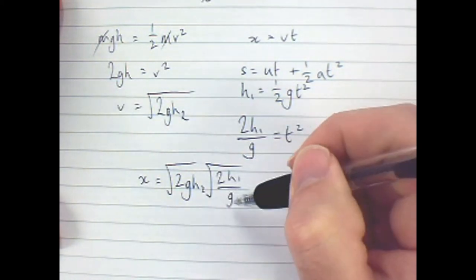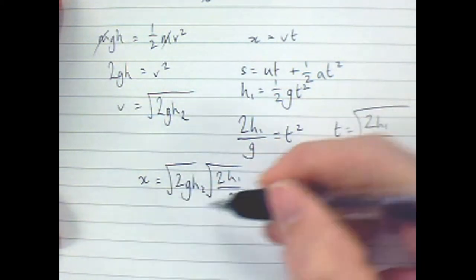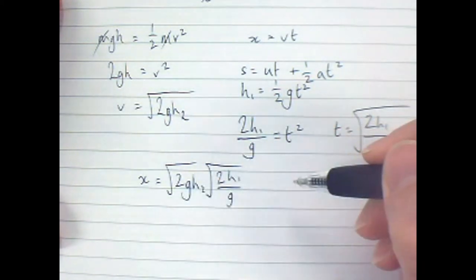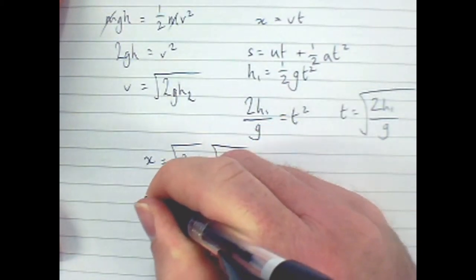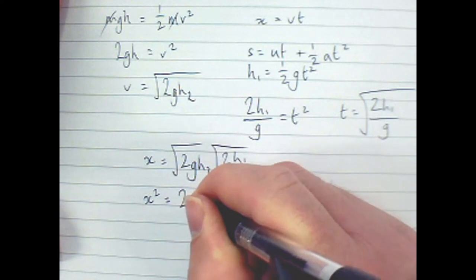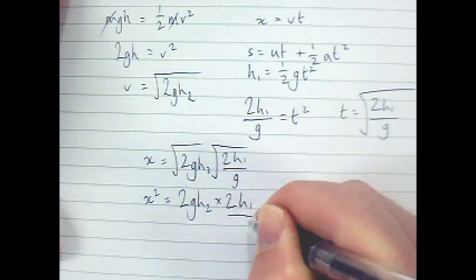OK. And, well actually, I've got some knowns, and I've got some things that I can simplify, so I'm just going to go ahead and do that. I think the simplest way is just to square everything. Certainly the simplest way to think about it. So X squared is 2GH2 times 2H1 over G.